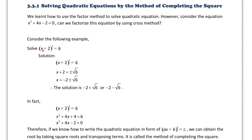How to solve (x + 2)² = 6? In this question, we can solve it using some prior knowledge without using the factoring method. Since x + 2 all squared is equal to 6, I can take the square root on both sides. So x + 2 is equal to positive or negative root 6. Then I subtract 2 from both sides: x = −2 ± √6.